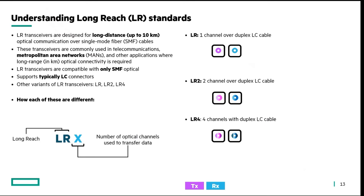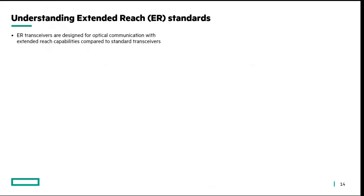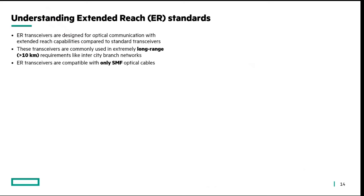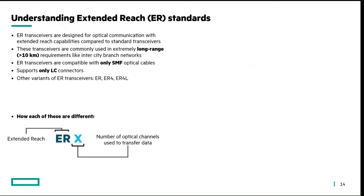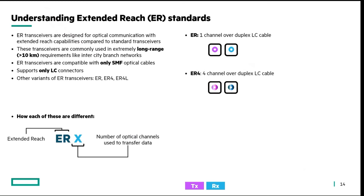LR-4 similarly has four channels over duplex LC cable. Next is ER, which stands for Extended Reach — ER transceivers are designed for optical communication farther than LR and SR transceivers, considered as greater than 10 kilometers, so they can be used for very long-range communications. ER transceivers are compatible only with SMF optical cables and support only LC connectors. Variants include ER-4 and ER-4L. ER-1 is one channel over duplex LC cable, ER-4 is four channels over duplex LC cable, and ER-4L is also four channels over duplex LC cable but with a little extra reach than ER-4.